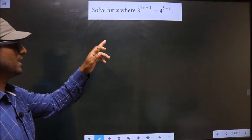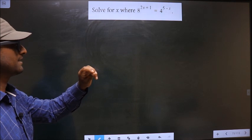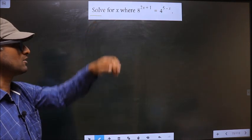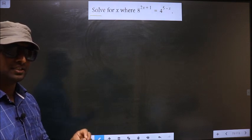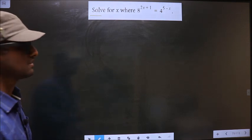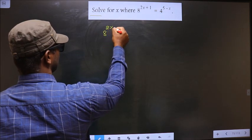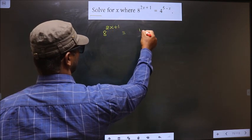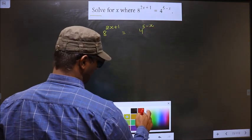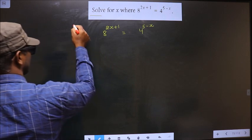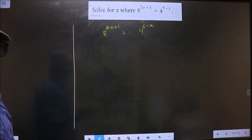Solve for x where 8 power 2x plus 1 equals 4 power 5 minus x. We should find the value of x. The given equation is 8 power 2x plus 1 equal to 4 power 5 minus x.